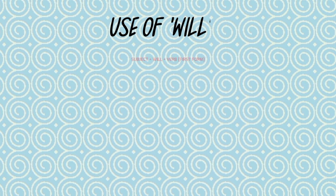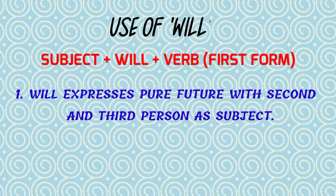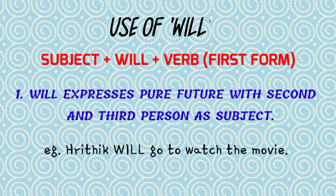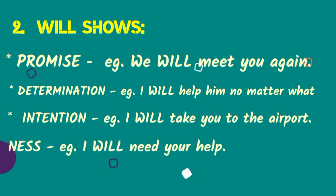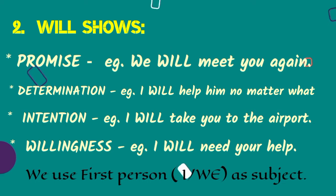Use of Will: While writing a sentence, first the subject will come, then will, and then the first form of verb will come. Will expresses pure future with second and third person as subject. Will poori tarah se future ke baare mein batata hai aur ismein third ya second person subject hote hain. For example: Hrithik will go to watch the movie. Will also shows promise — we will meet you again. Determination — I will help him no matter what.